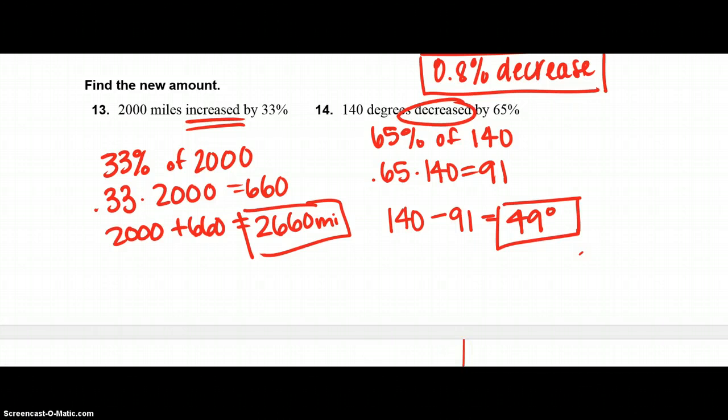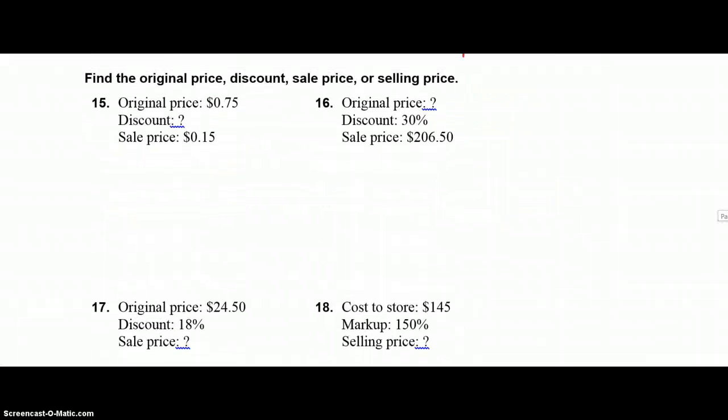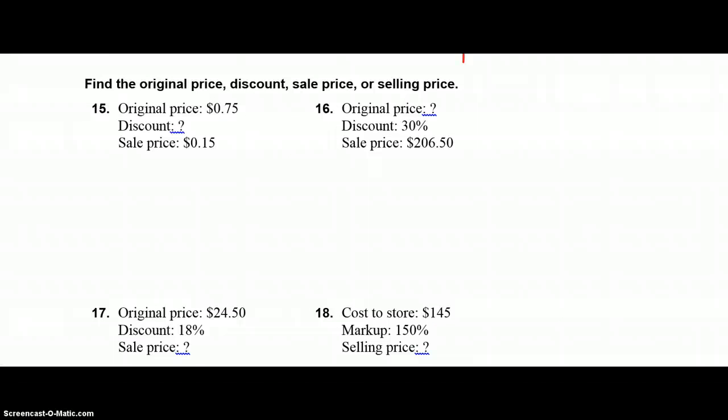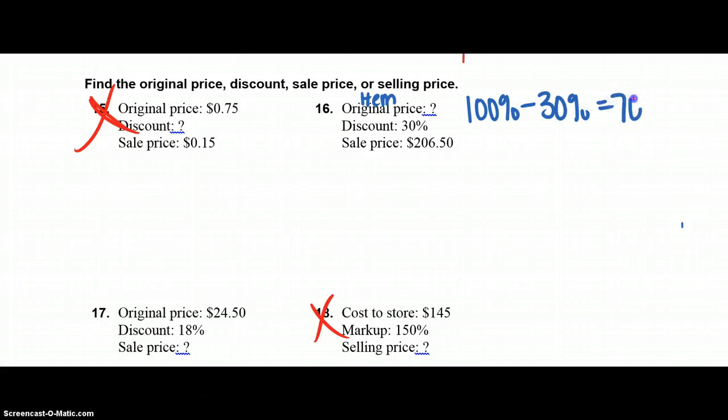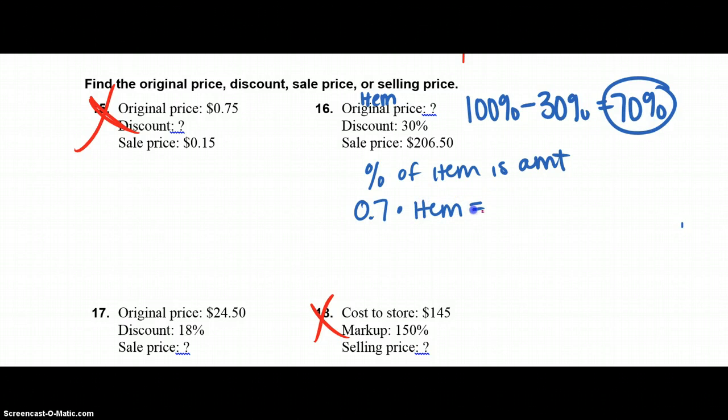Next questions are finding the original price, discount, sale price, or selling price. I had you cross out number 15 and also number 18. So I'm going to do 16. So original price, you can also think of this as item. Discount is 30%, and the sale price is 206.50. The first thing you have to do when you're finding the original price is find the percent that you actually paid. So you have to take 100% and subtract 30%, and you actually paid 70%, so that's what you're going to use in your formula. Then I have percent of item is amount. So my percent is 0.7, of is multiply. My item, I don't know, so it's just item, is is equals, and your amount is your sale price, so 206.50. To solve for your item, divide both sides by 0.7, and your item ends up being $295.